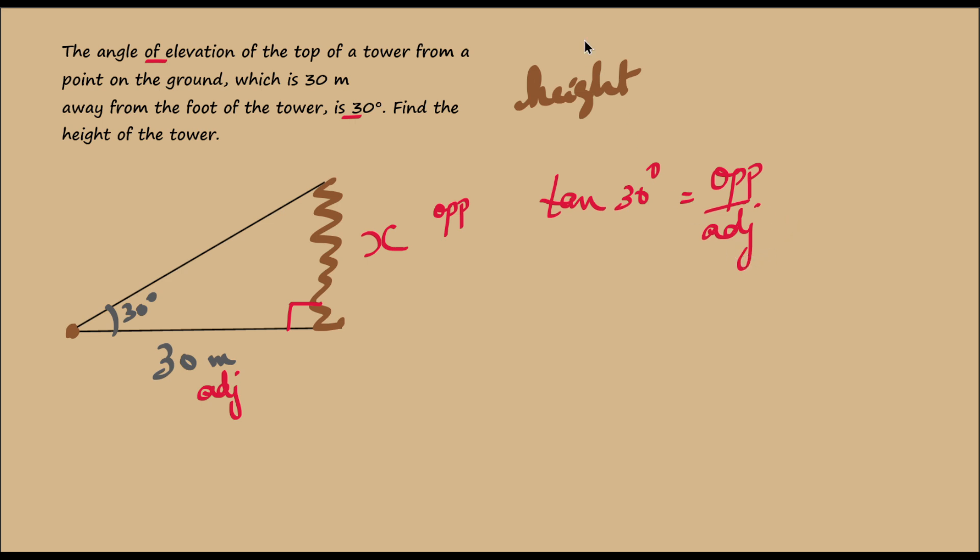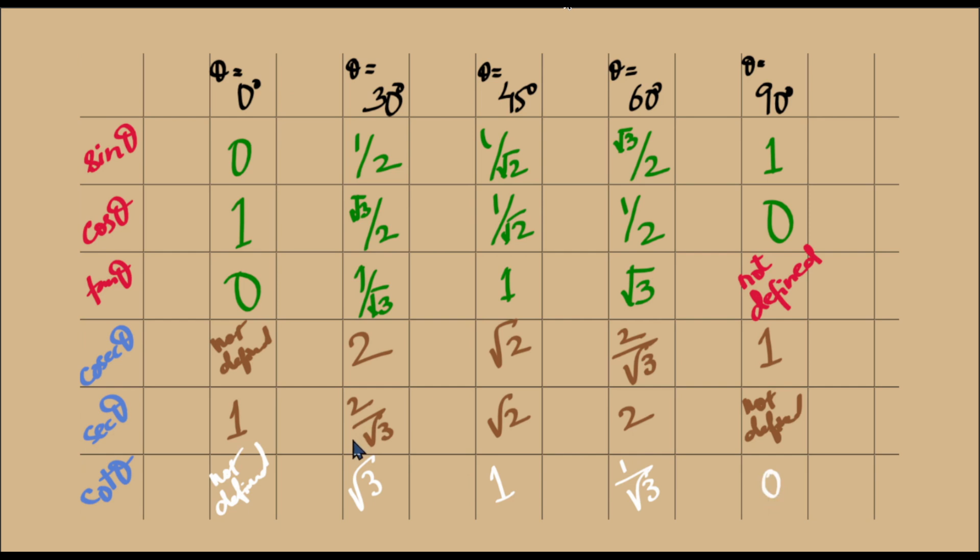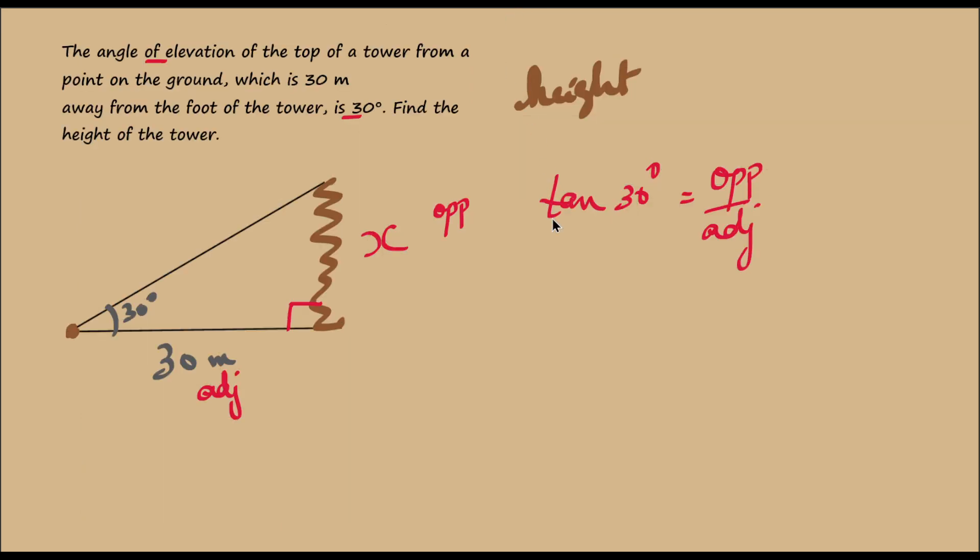And we know what tan 30 degrees is. Tan of 30 is 1 by root 3. Now we have derived all these trigonometric ratios in a separate video on Math Decoded. I suggest that you go and see that for a better understanding. I will provide the link in the description.